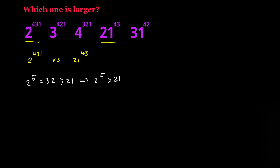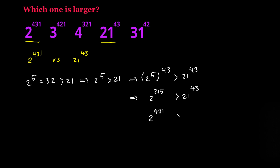Now if I raise both sides to the power of 43, I will have 2 to the power of 5, raised to the power of 43, is greater than 21 to the power of 43. Based on the rules of exponents I can rewrite the left-hand side as 2 to the power of 5 times 43, which is 215. And obviously 2 to the power of 431 is larger than 2 to the power of 215. So by the transitive property, 2 to the power of 431 is greater than 21 to the power of 43, meaning that number cannot be the largest.